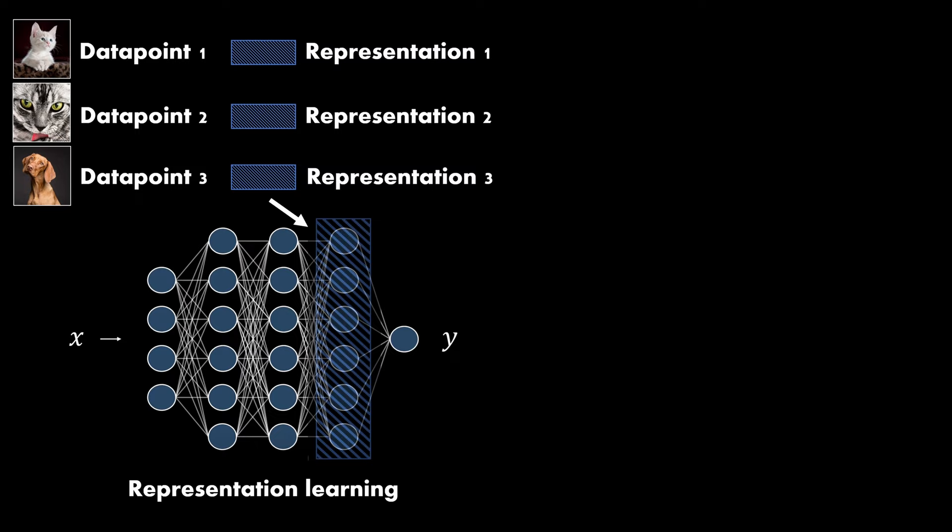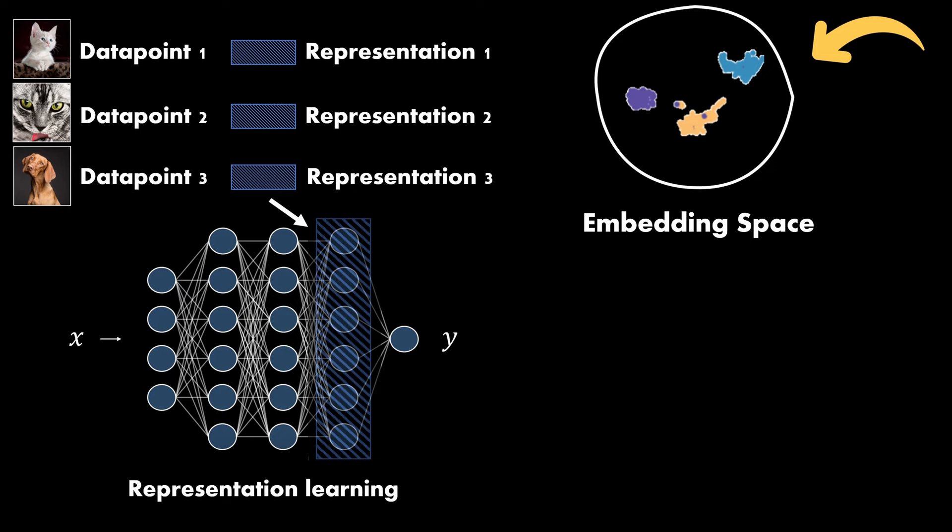When we train in a supervised fashion, the embedding space is typically arranged according to our annotations. For example, if we have three classes, the representations could be separated like this. But what do we do if we have no labels? How can we learn meaningful representations of our data without any targets? Contrastive learning is one possibility to do this, and in fact this method is not limited to unsupervised training but has also shown success in supervised setups.